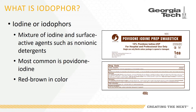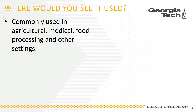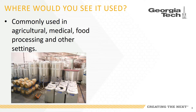When used as a disinfectant, typically iodine is mixed with a detergent or chemical. Iodine is used for disinfection in agricultural, medical, food processing, and a variety of other settings. Diluted iodophor is often used by brewers and winemakers to sanitize equipment and bottles.